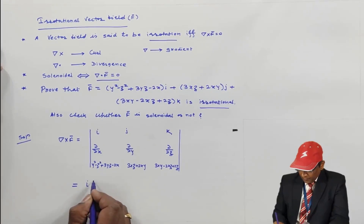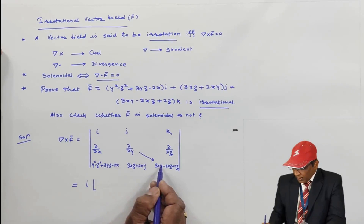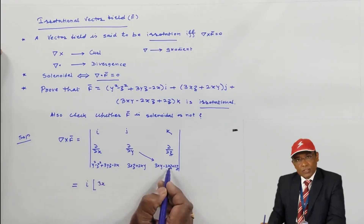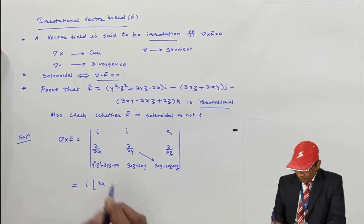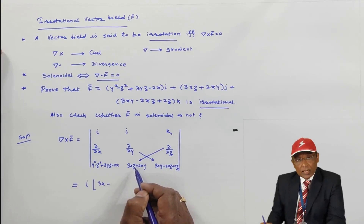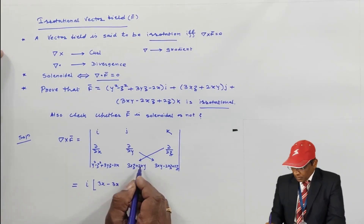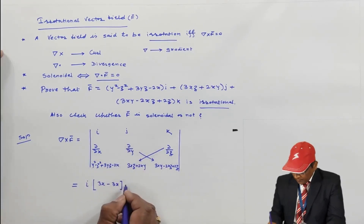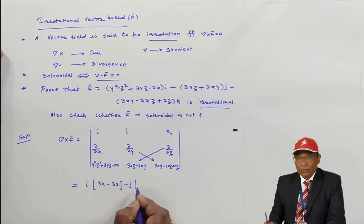We expand this determinant and write the result directly. For the i component, we take the minor of i — the partial derivative with respect to y of (3xy − 2xz + 2z) gives 3x, and the partial derivative with respect to z of (3xz + 2xy) gives 3x. Then, with the default minus sign, we compute the minor of j.